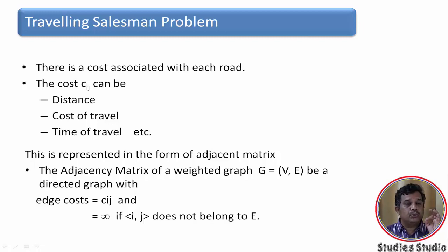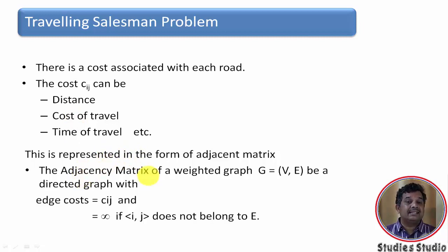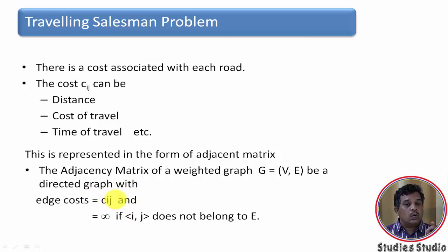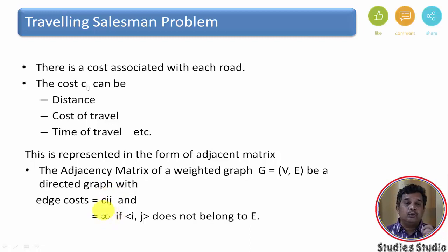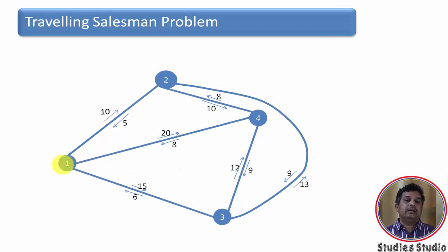Which path to choose so that the cost of travel or the time of travel will be minimized? We associate this problem with a cost matrix, and I represent the value of the cost with C_ij. The cost may be distance, cost of travel, or time of travel. To represent it we need an adjacency matrix.